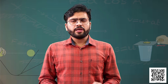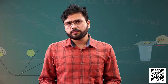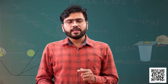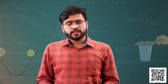A spring balance in your physics laboratory is used to measure the amount of force. If we take two spring balances and set them up as shown in the diagram, when we pull spring balance A with our hand we exert a certain amount of force. The pointer reading of spring balance A shows that force, and since spring balance A is attached to spring balance B, there is also a pointer displacement in spring balance B.